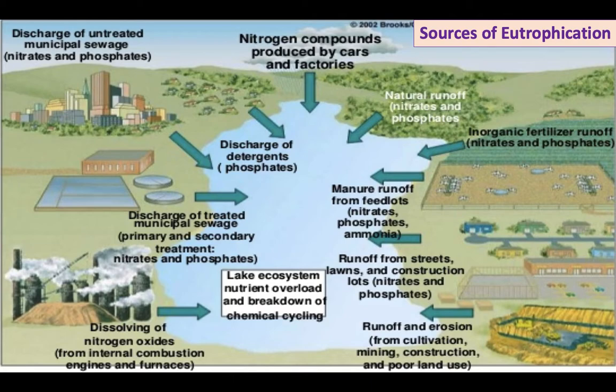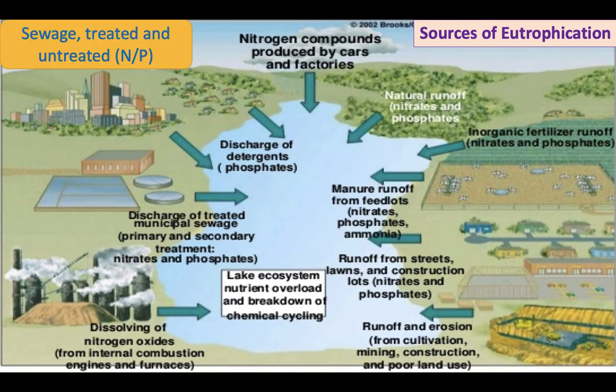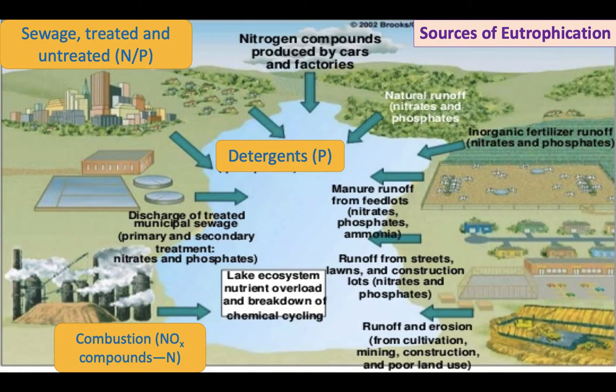Here's a diagram showing different sources of nutrient pollution. It can come from sewage — whether treated or not — introducing nitrogen and phosphorus. Laundry detergents that run off can introduce phosphorus, as many are made from phosphates, although there have been some bans reducing phosphates in detergent. The combustion of fossil fuels releases nitrogen oxides, which can dissolve into lake water and introduce nitrogen — not as big a source, but it can happen.